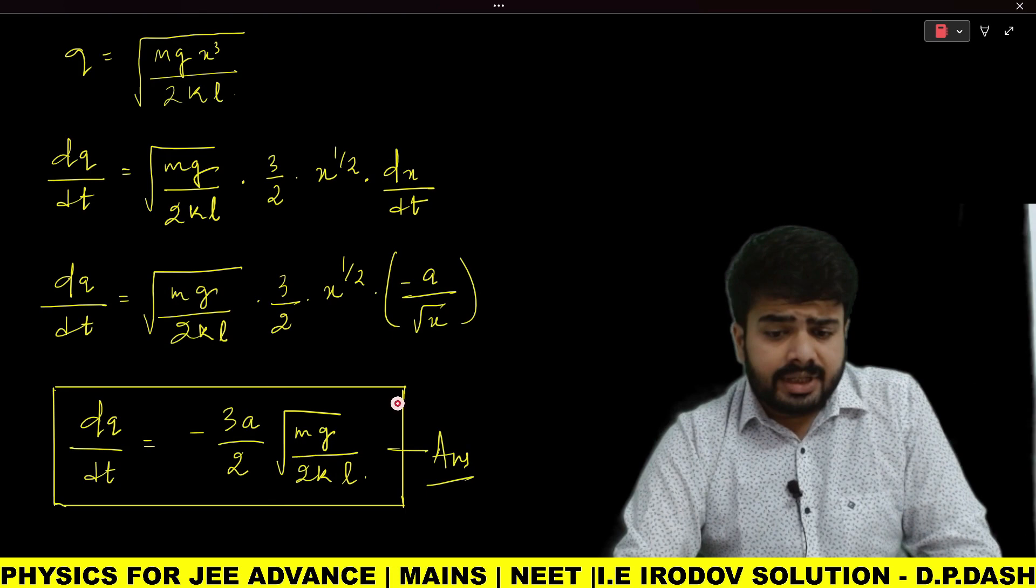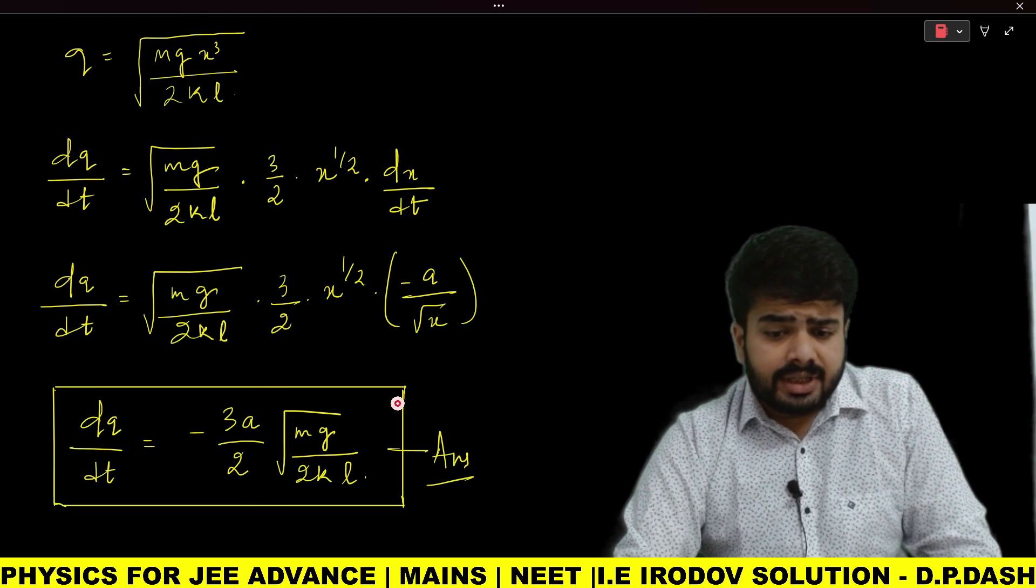Be careful that if in the options k is given as 1/(4πε₀), then you need to substitute this value of k and you will get the answer in terms of ε₀.